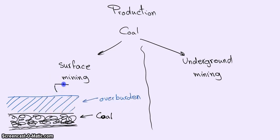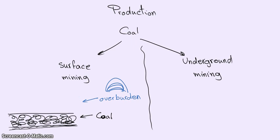So what happens here is that the overburden is removed first and stored aside. Then the coal is removed, and eventually the overburden is put back into place.